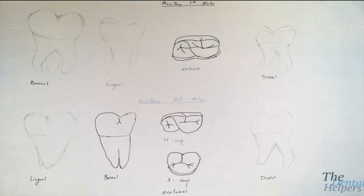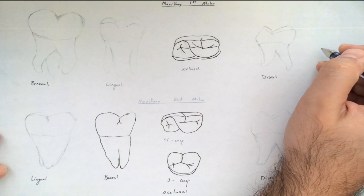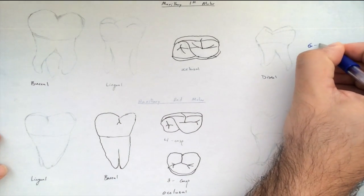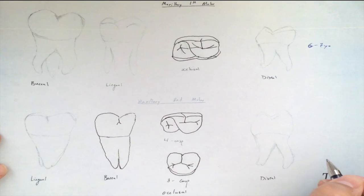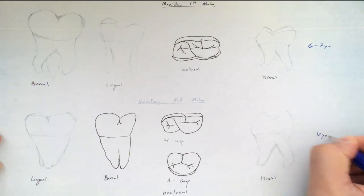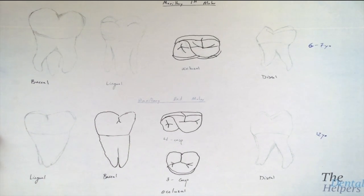We're going to look at the maxillary molars, starting with the age of eruptions. The maxillary first molars — the same as mandibular first molars — are your six-year molars, erupting around six to seven years old. The maxillary second molars come out a little later, at approximately 12 years old. Mandibular second molars are about the same, coming out around 11 to 13 years old.